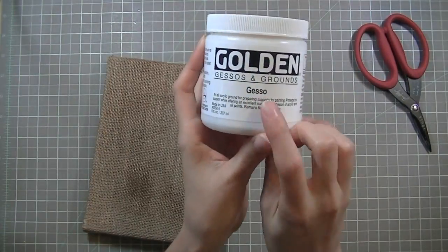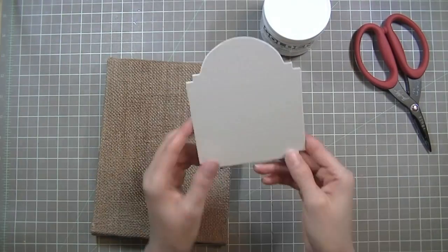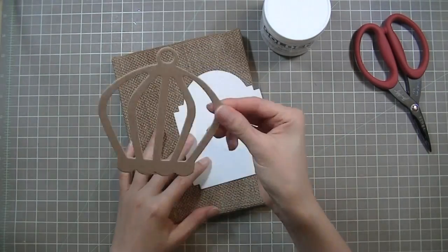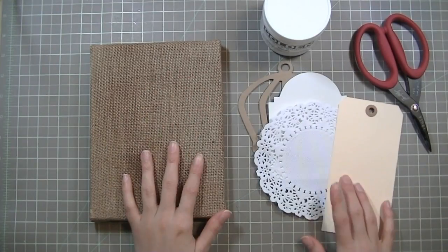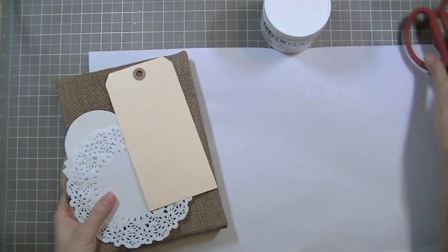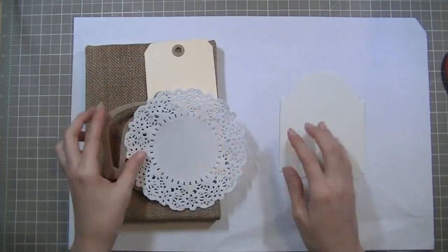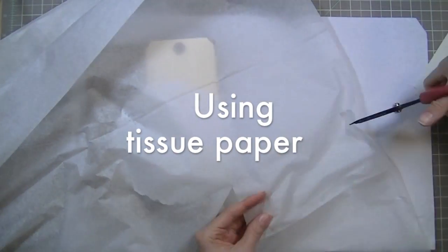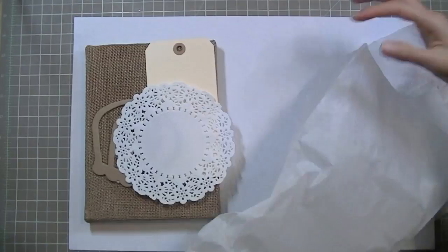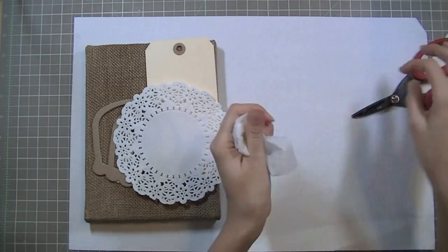I'm going to be using a lot of gesso and also some die cut pieces. These have been cut with the AccuCut or my Cuddlebug. That white piece is the vintage card, I believe it's called, by Tim Holtz. It's one of his alteration dies and I'm going to be using some tissue paper on it.